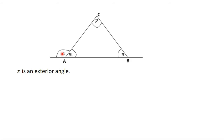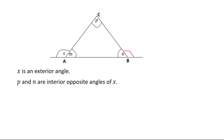Why am I stressing this? There is a very important property here. P and N are the interior opposite angles of X. Similarly, if we create another exterior angle at a different vertex and call it B, then M and P would be the interior opposite angles of B, because the interior angle adjacent to B is N, and the ones opposite to it are M and P.